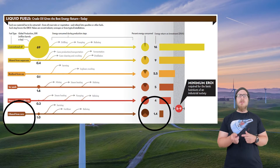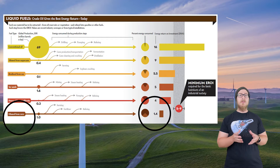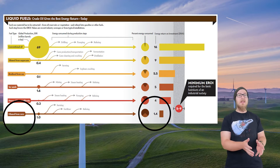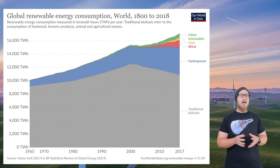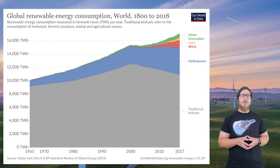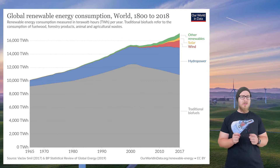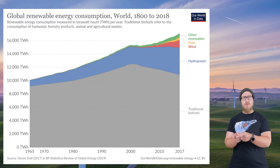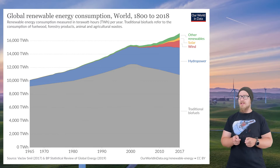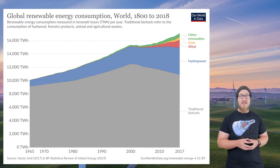However, the energy return on energy investment for ethanol is low, meaning it takes quite a bit of energy to actually get it, and we don't get that much out of it. Biomass is the most common form of renewable energy used worldwide, but it's only considered renewable if trees are grown faster than they are removed, which is not currently the case.